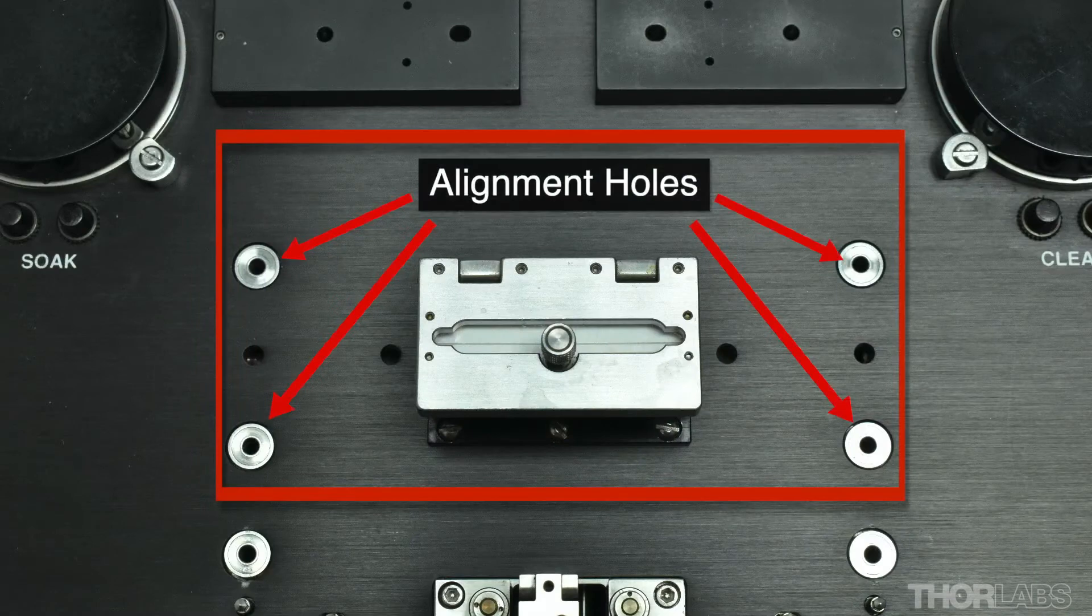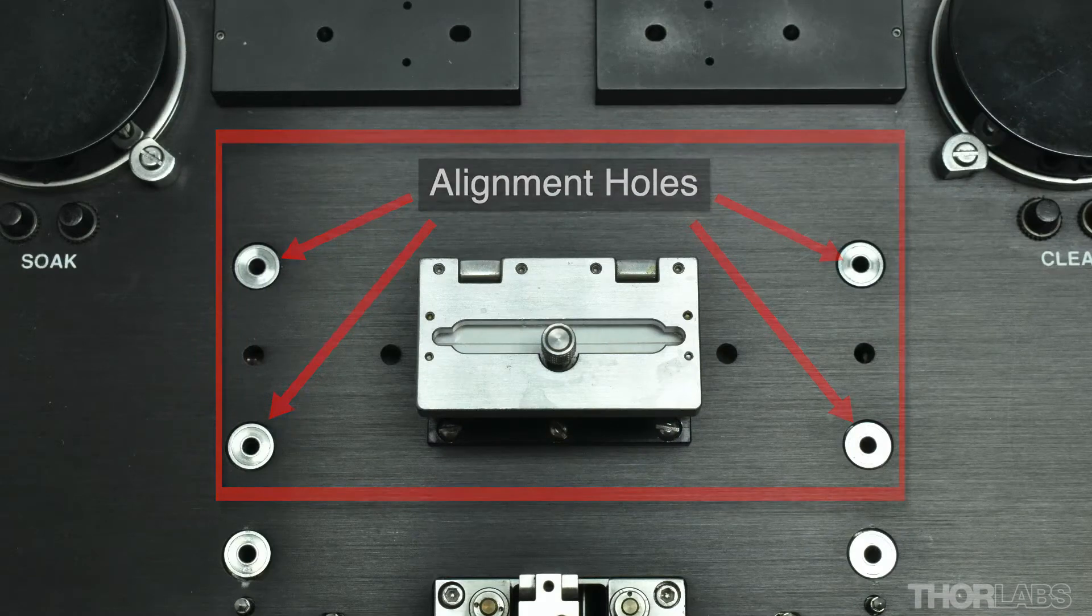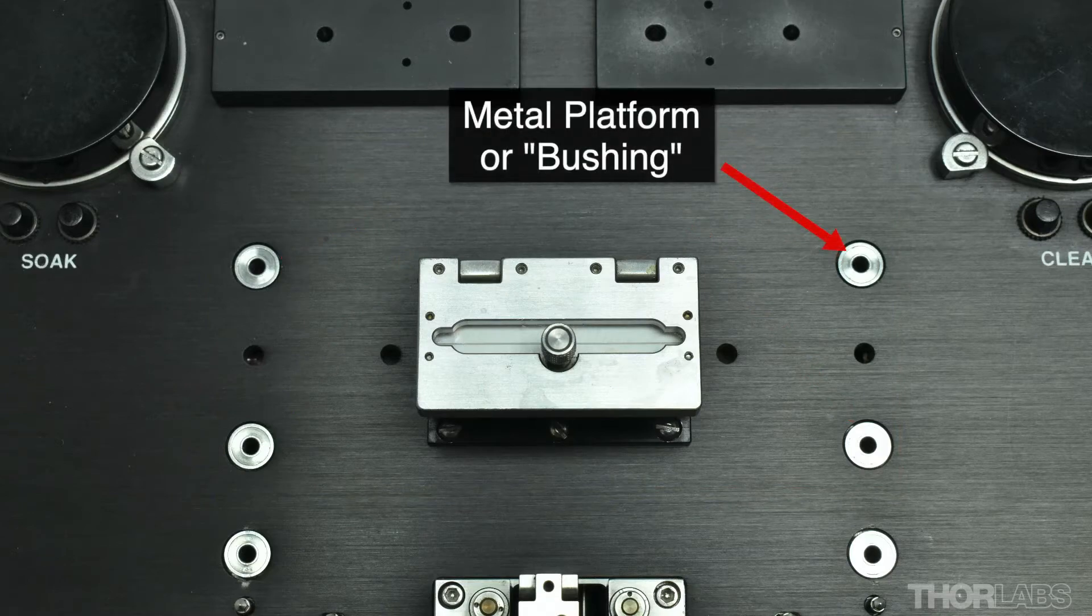There are several alignment holes around the recoat station that will accommodate the transfer jig. Note the metal platforms or bushings around each of these alignment holes.